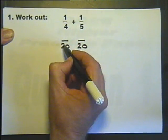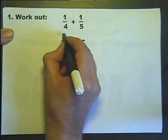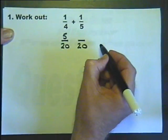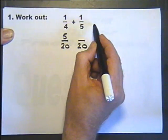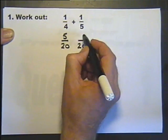The bottom number has been multiplied by 5 and the top number must be multiplied by the same thing, 5. Whatever the bottom has been multiplied by, you must multiply the top by the same. So 4 times 5 is 20 and 4 times 1 is 4.